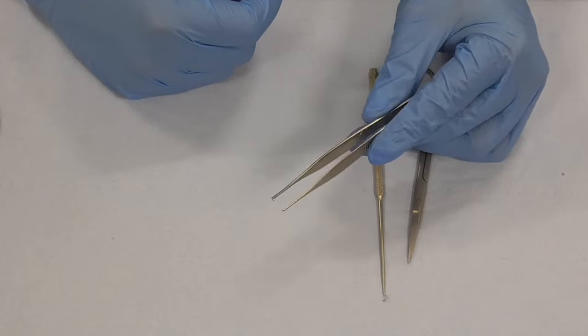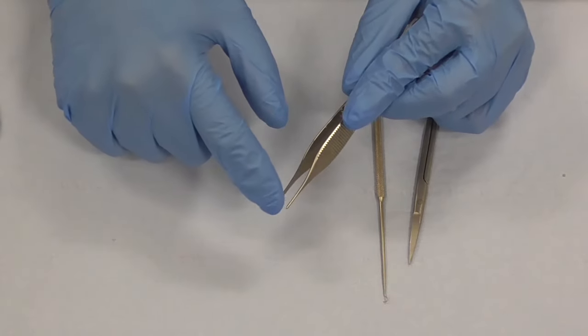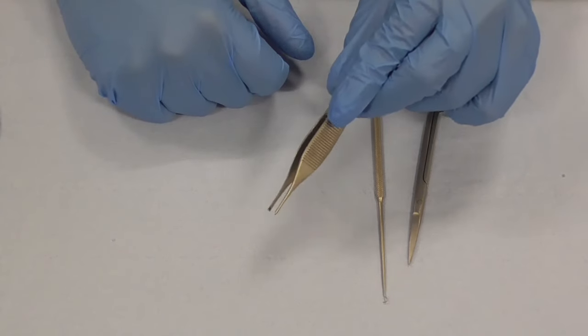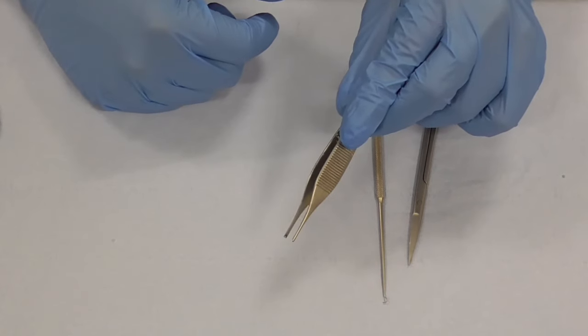What is probably advised for skin suturing is not to actually grasp at all but to use one or the other tooth as a hook mechanism. So you just hold it and we'll demonstrate that when we're showing you how to stitch.